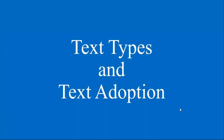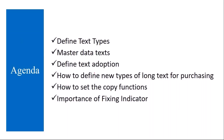The topics we are going to cover: we will define text types and understand what they are and how they are used. Then master data text — what texts are maintained in master data like the material master, business partner, and purchase info record. Then we will see defined text adoption — how texts are adopted from master data to purchasing documents or from one purchasing document to another. We'll also cover how to define new text types for long text in purchasing, how to set the copy functions for text adoption, and the importance of the fixing indicator.